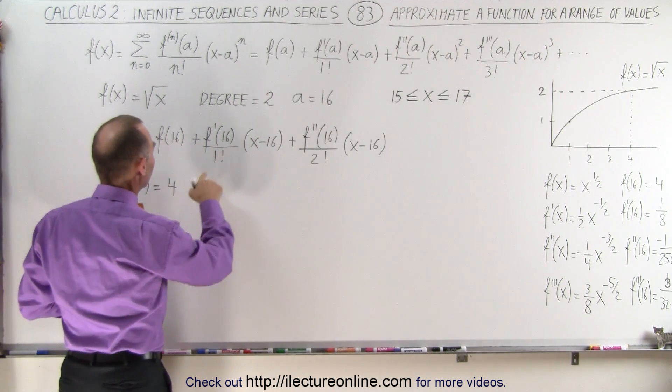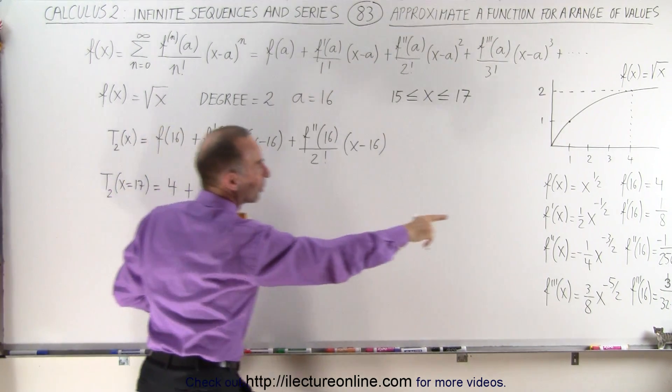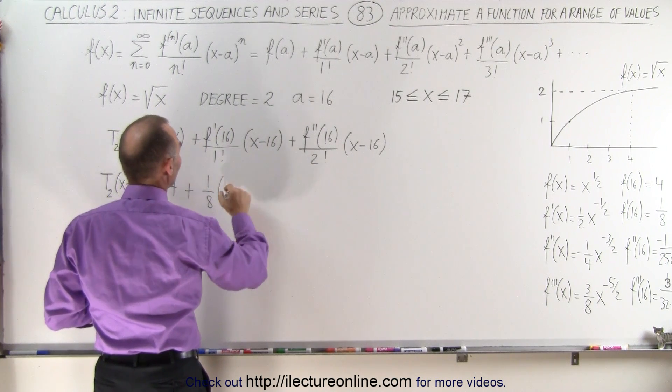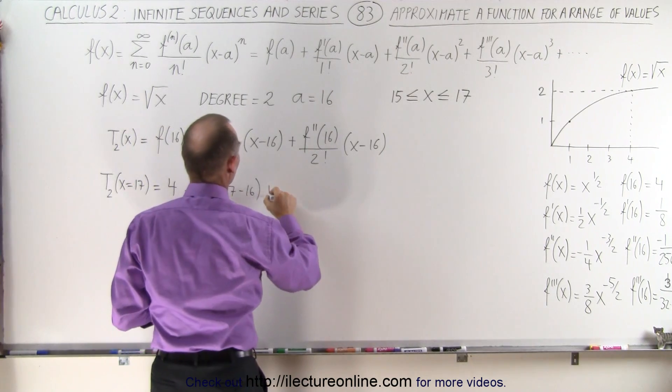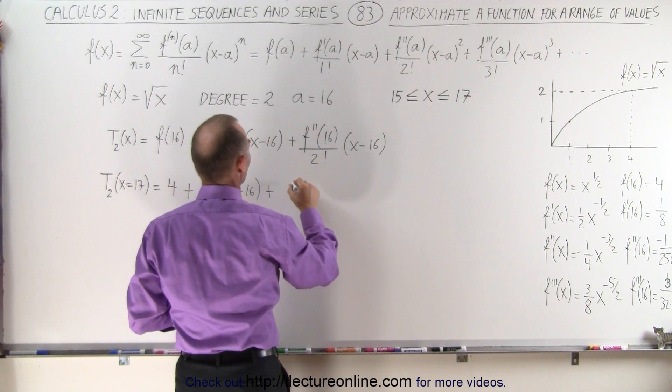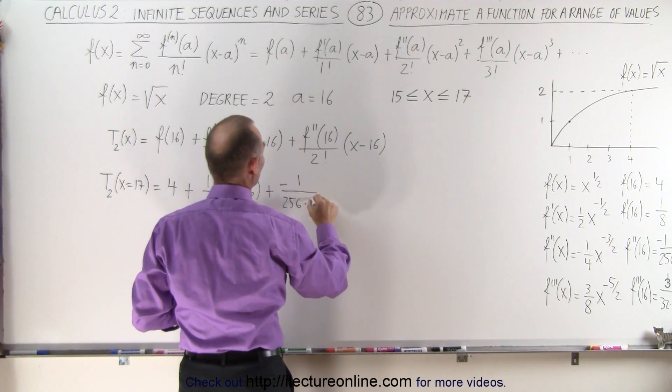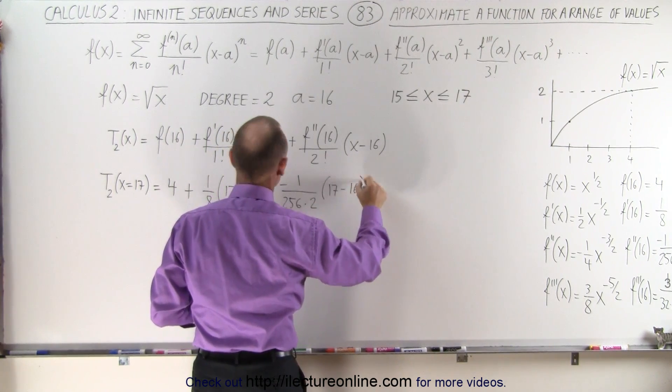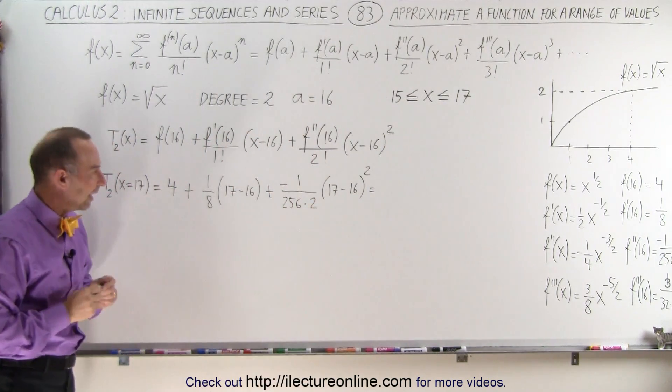So we get 4 and then plus f prime evaluated at 16, which is 1/8 divided by 1. So we get 1/8 times (17 minus 16), which of course is 1, and then plus f double prime of 16 is minus 1 over 256. So minus 1 over 256 times 2 factorial, which is 2, times (17 minus 16) to the second power. I forgot the second power over there. Can't forget that.